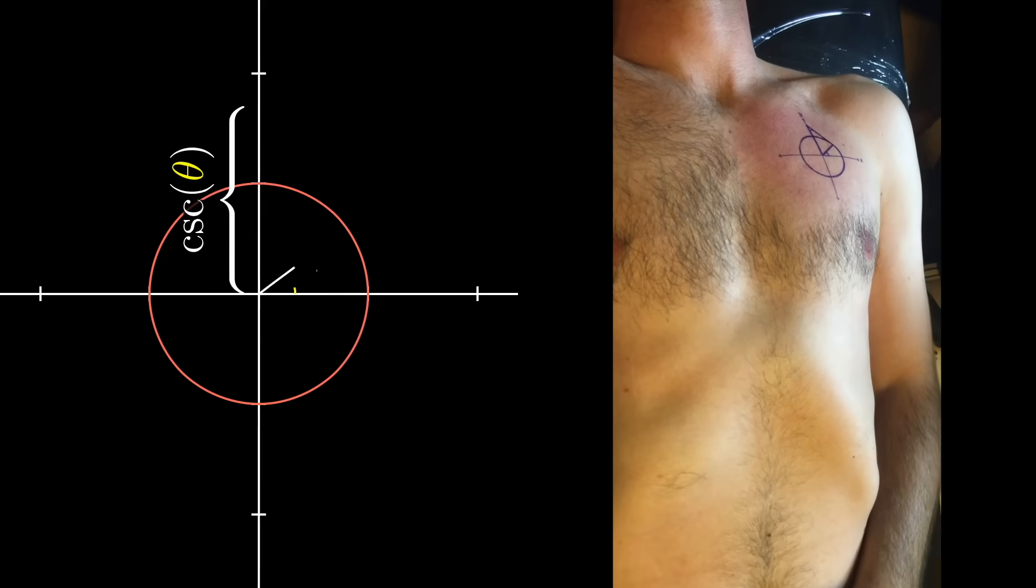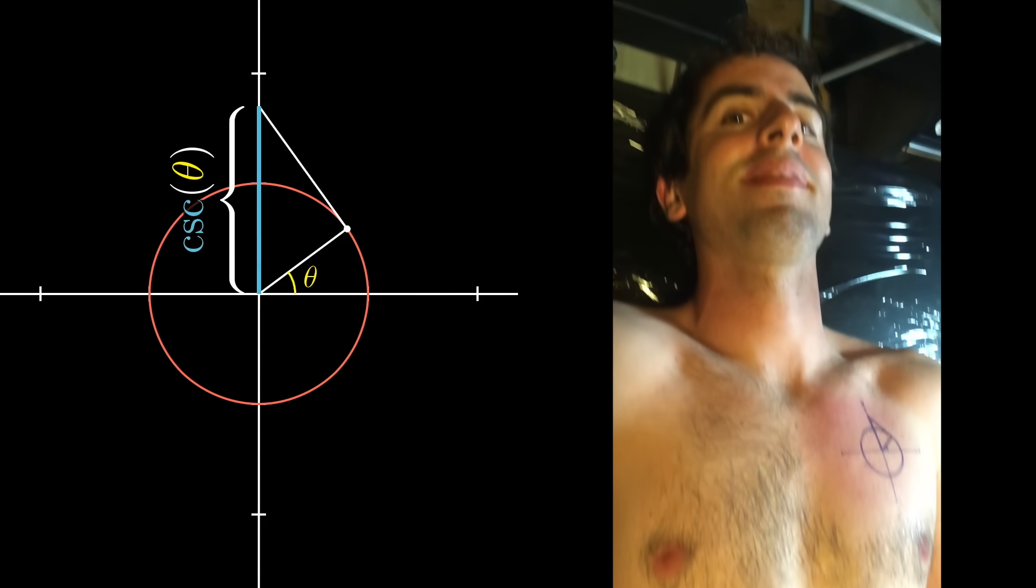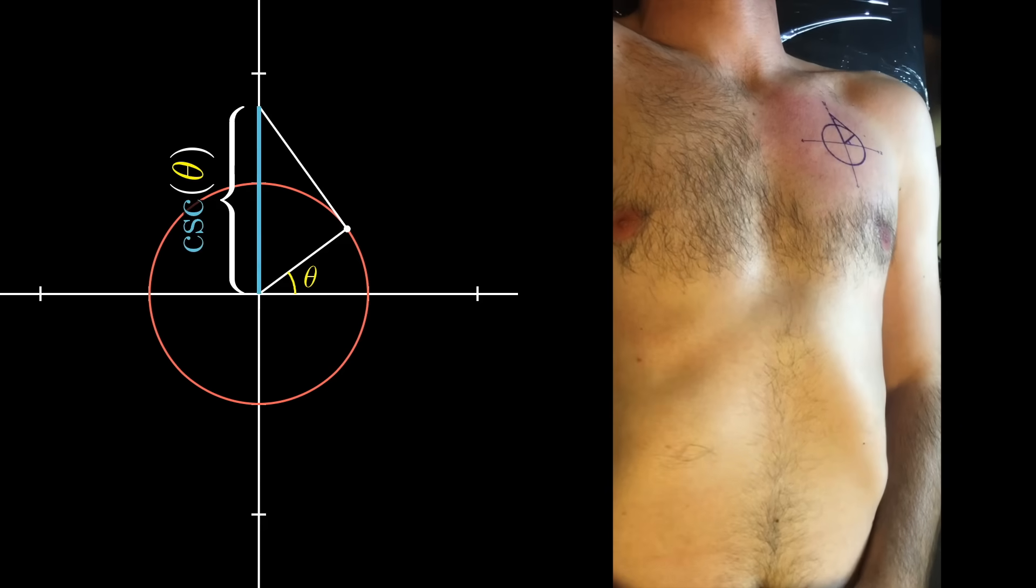Cam's initials are CSC, which happens to be the shorthand for the cosecant function in trigonometry. So what he decided to do is make his tattoo a certain geometric representation of what that function means. It's kind of like a wordless signature written in pure math.